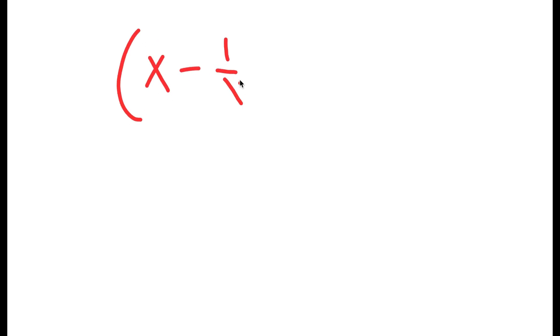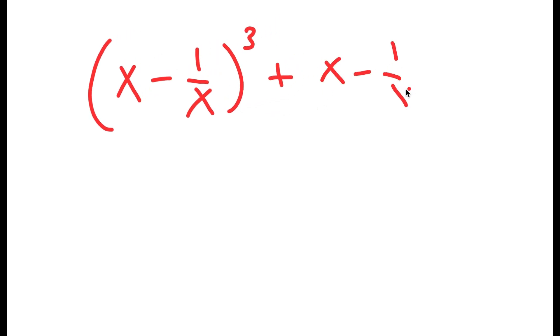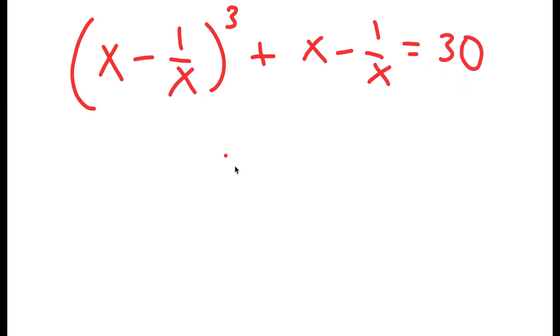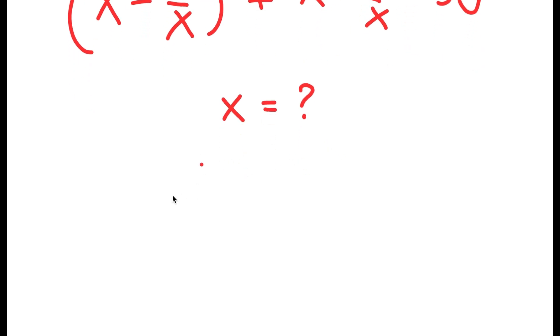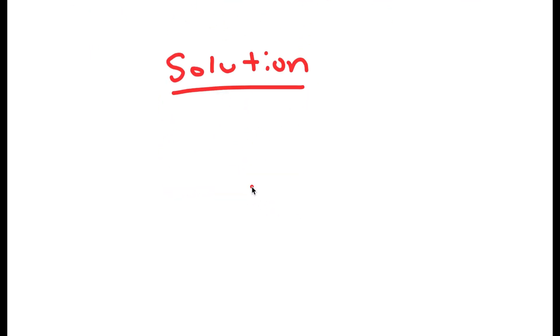Hey guys, welcome back to Click Academics. In today's video I'm going to be solving an intricate equation. We have x minus 1 over x to the power of 3 plus x minus 1 over x is equal to 30, and I want to find the value of x here.